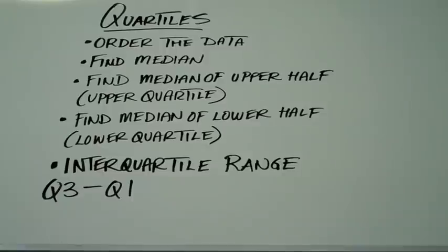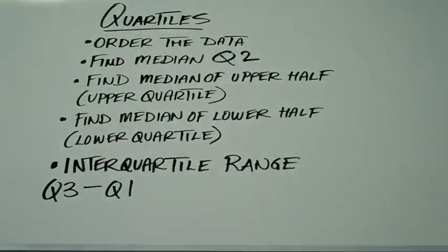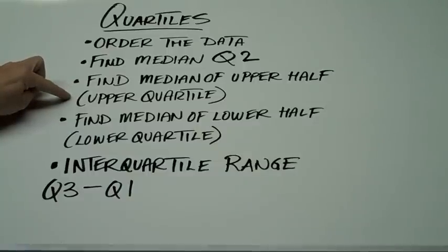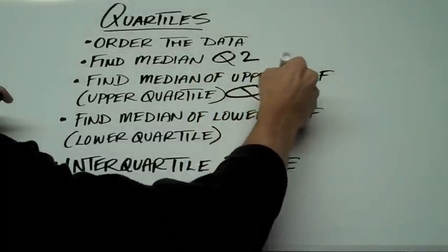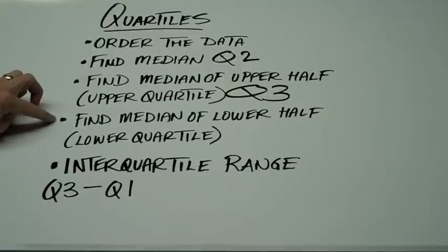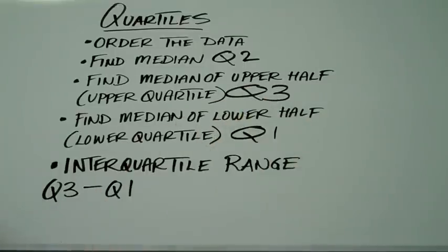Another measure of spread would be to use quartiles. Just like a dollar has 4 quarters representing 25% each, quartiles divide data into four equal parts. To find quartiles, first order the data and find the median — that's quartile 2, or Q2. It separates the data into a lower half and an upper half. The median of the upper half is the upper quartile, Q3, and the median of the lower half is the lower quartile, Q1. The interquartile range is simply Q3 minus Q1, and each of the four quartiles contains 25% of the data.